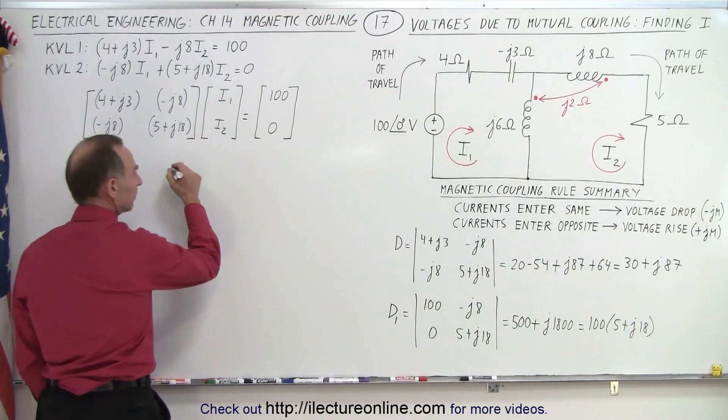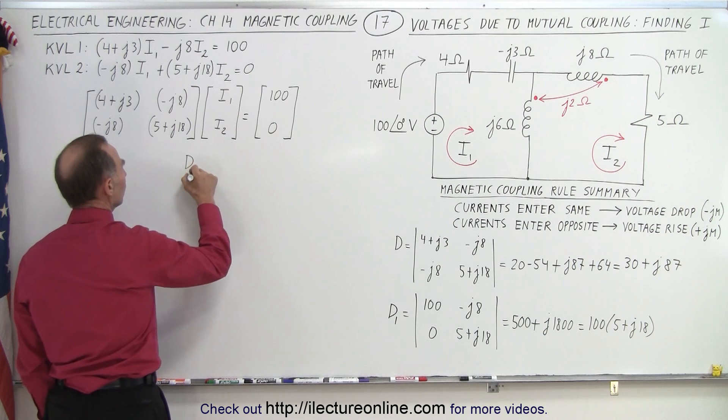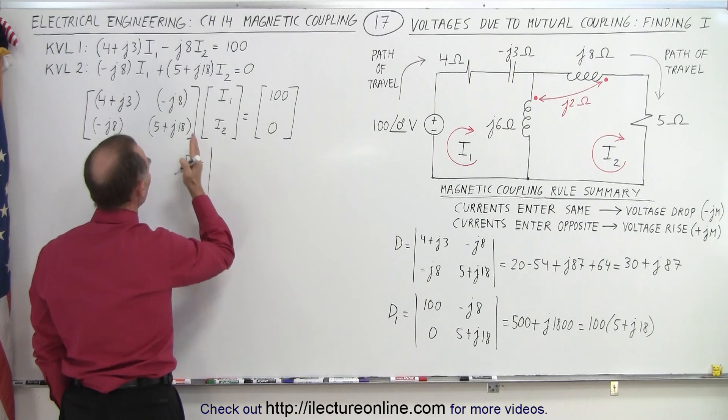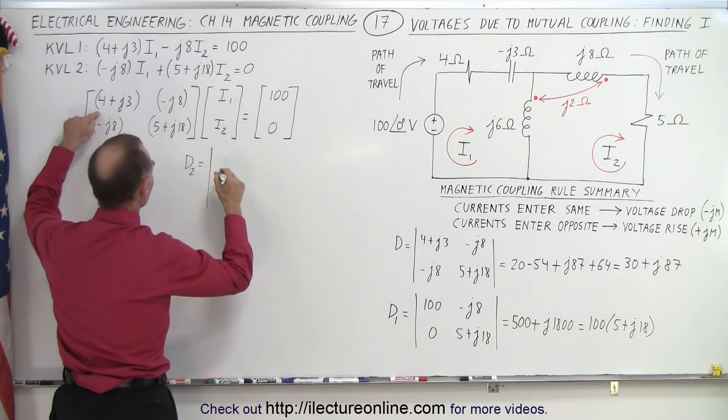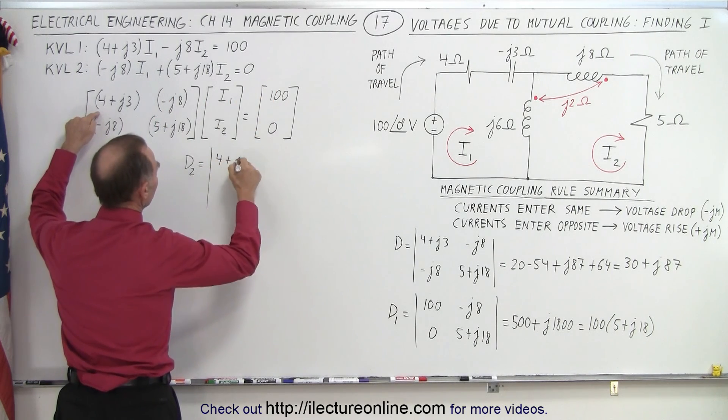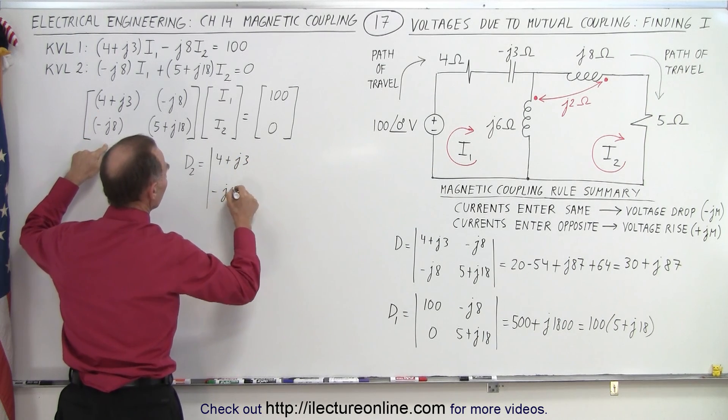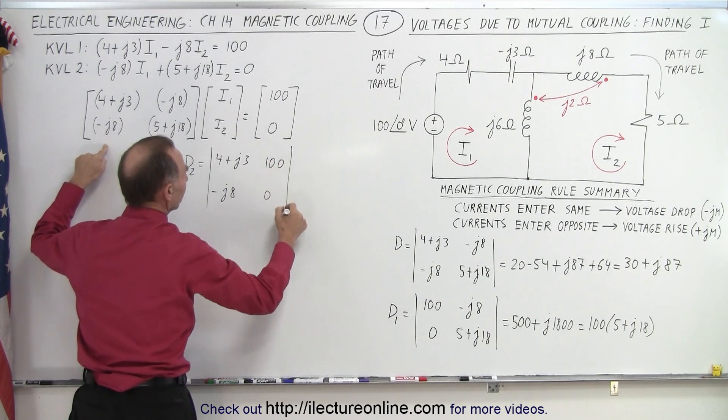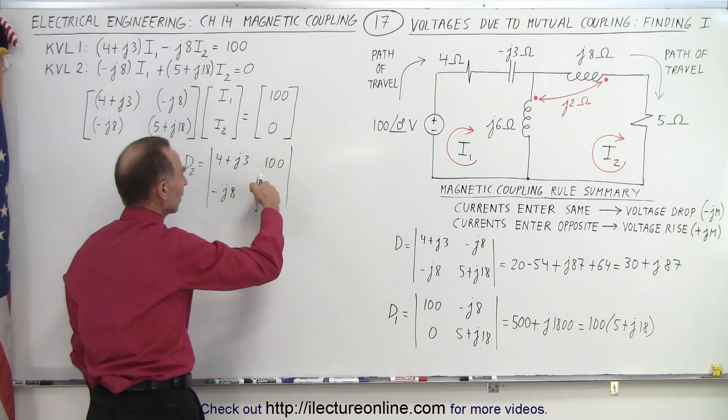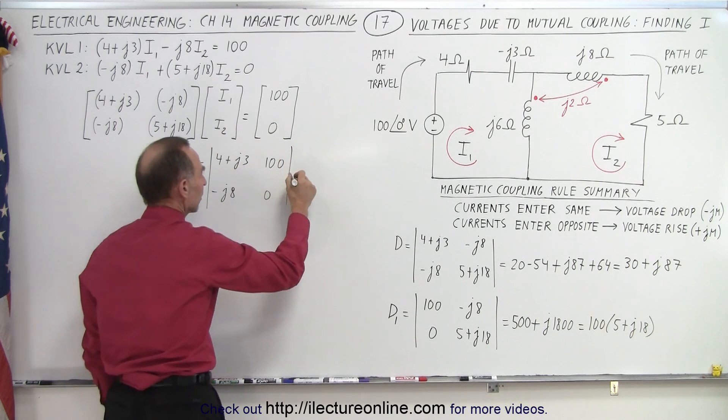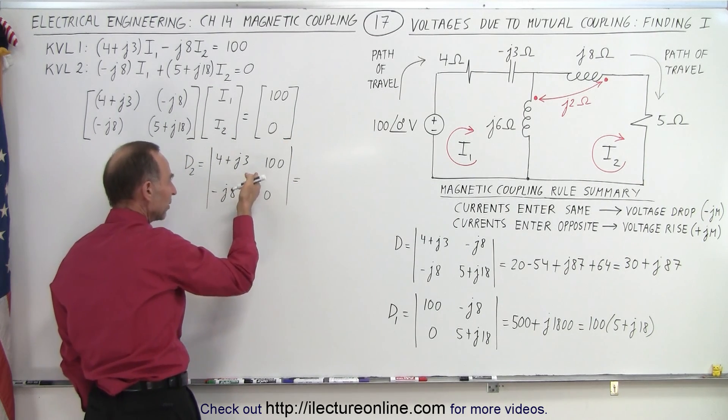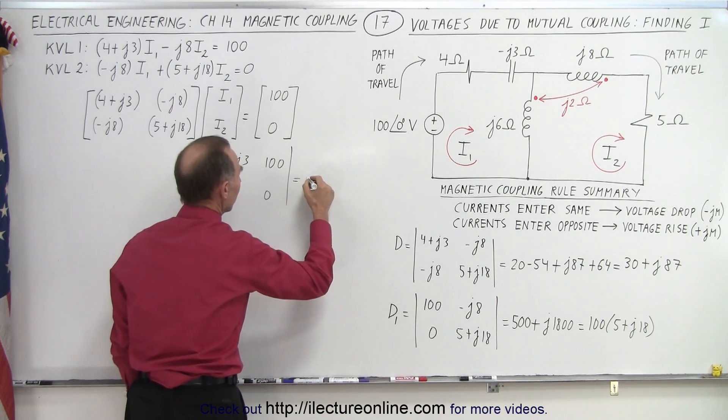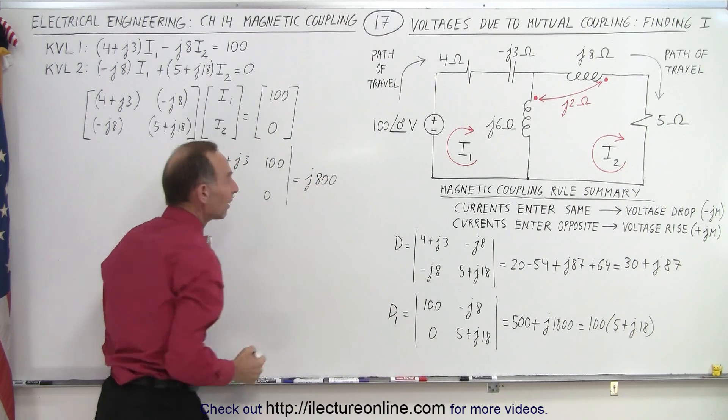Alright. Now we find D2. So D2 that is equal to, now we take the same matrix like this, but we replace the second column by 100 and 0. So we end up with 4 plus J3 and minus J8. And then we plug that in here, it should be an 8, 100, and 0. Again with the 0, it makes it a little bit easier. We don't have to worry about this product, but we do have to worry about this product. Now we subtract this product, so that would be minus times this minus becomes a plus, and J8 times 100, that would be J800.